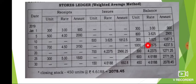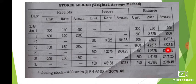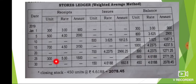This is the weighted average. Okay, 4.23 — we get the average rate as approximately 3.23 for the issued units.